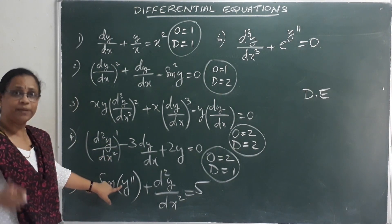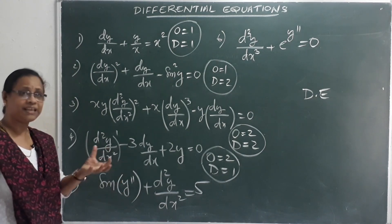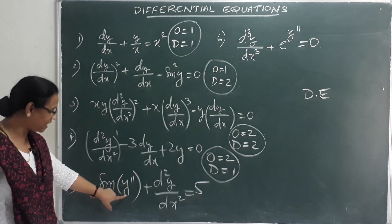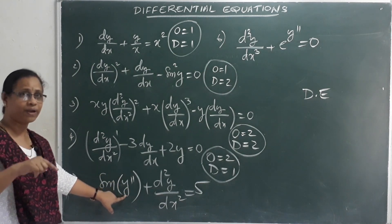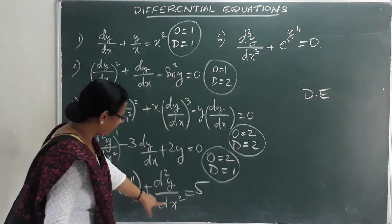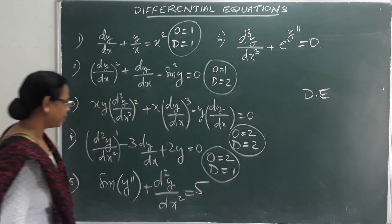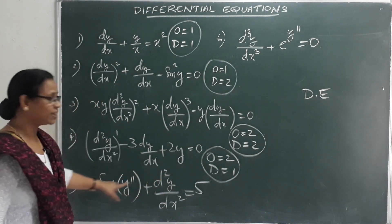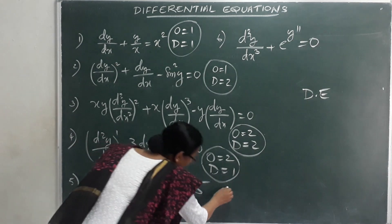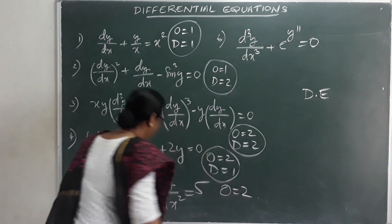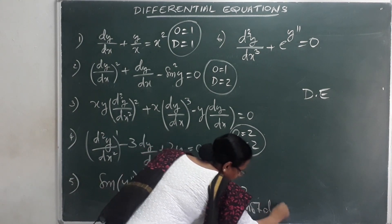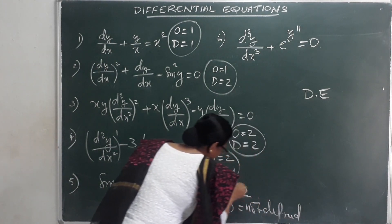The fifth question involves: sin(y'') + d²y/dx² = 5, where y double dash means d²y/dx². The order is 2. However, because the derivative appears inside a trigonometric function (sin), the degree is not defined.